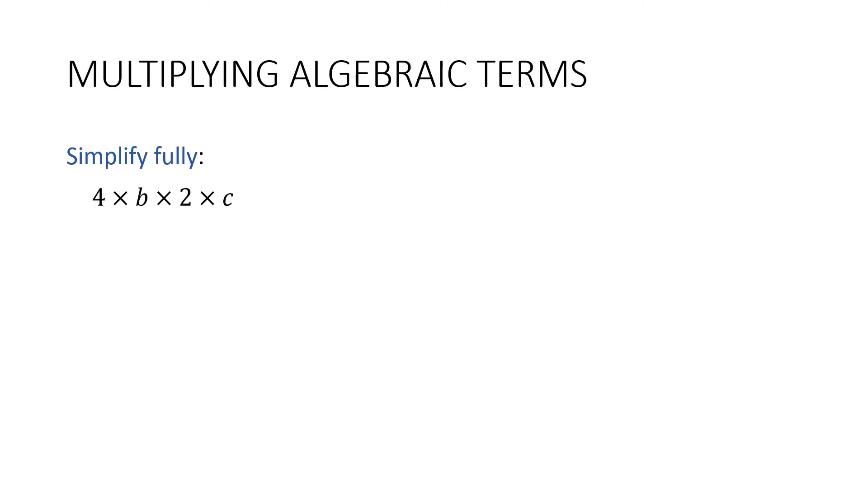Now we're being asked to simplify fully. What do you think that means? Well, look at that expression there. We could simplify this by taking out this times sign. That's a simpler version. But I can do more, can't I? I could take out this times and this times. So remember, I need to multiply these numbers. So in simplest form, it's going to be 8bc.